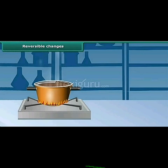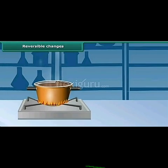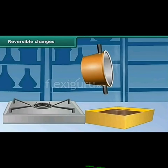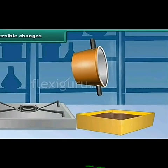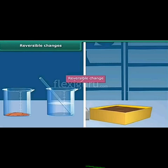Another example: I am heating a bowl of chocolate. I have already poured chocolate in the bowl and I am continuously heating it. The chocolate will melt, and I pour the melted chocolate into a square container. It will take the shape of the square, and after some time it will freeze. All these are examples of reversible change.